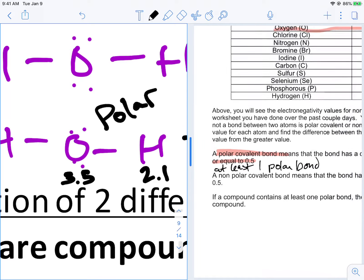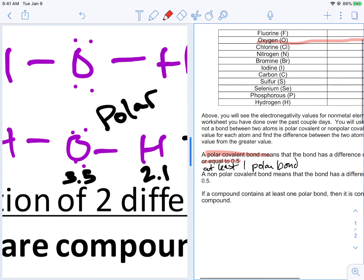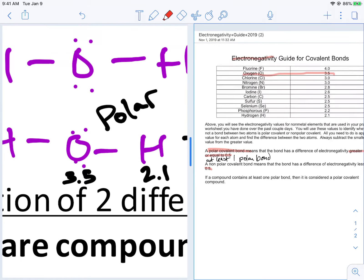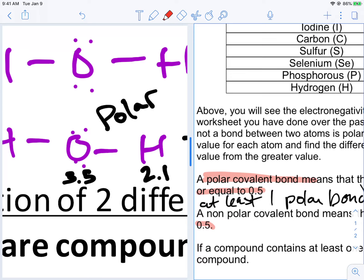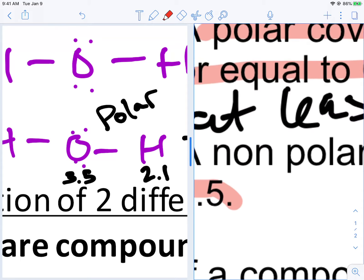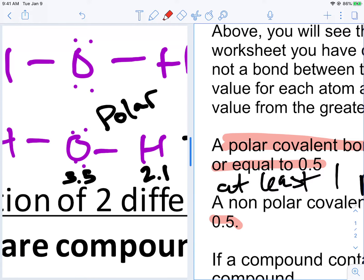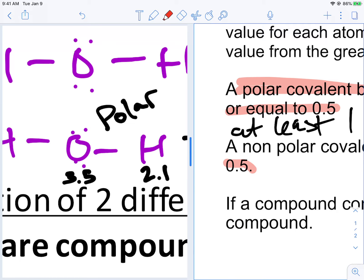If you're non-polar, you are below 0.5. You can't be equal to 0.5 and be polar because we just said if you're equal to 0.5 or above, that means you're polar. I mean, sorry, you can't be equal to 0.5 and non-polar because we said if you're equal to or greater than 0.5, that means you're a polar compound. So you have to be below 0.5 to be non-polar.